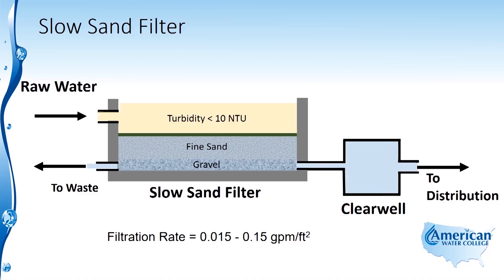For a slow sand filter, as its name indicates, the filtration rate is very low — in the range of 0.015 to 0.15 gallons per minute per square foot of filter surface area. It's got a very low flow rate in relation to the surface area of the filter, and that's why it's called a slow sand filter.